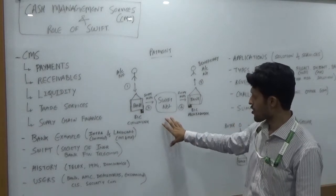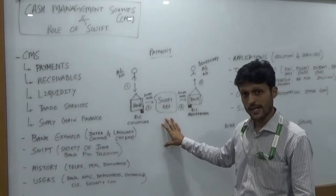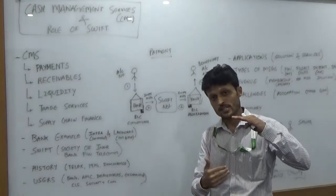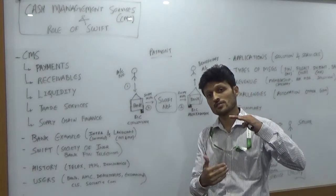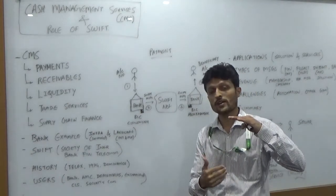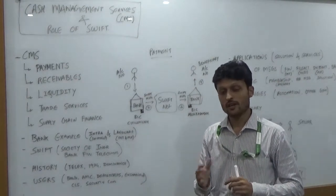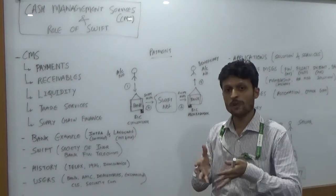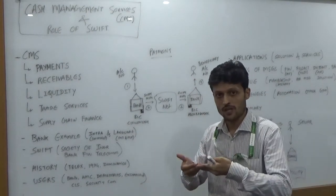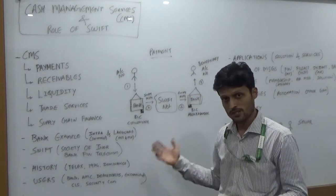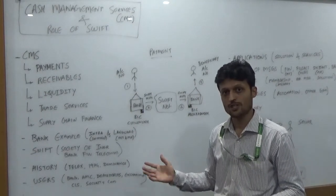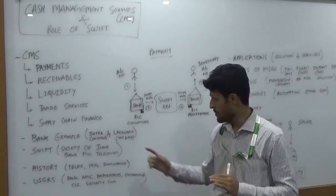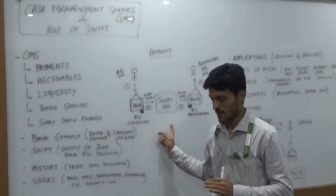SWIFT was introduced in 1974, and within just three years it had occupied 230 banks in five different countries — that was its initial dominance. Today, SWIFT has 10,000-plus financial institutions linked with the SWIFT network, all banking with the help of SWIFT.